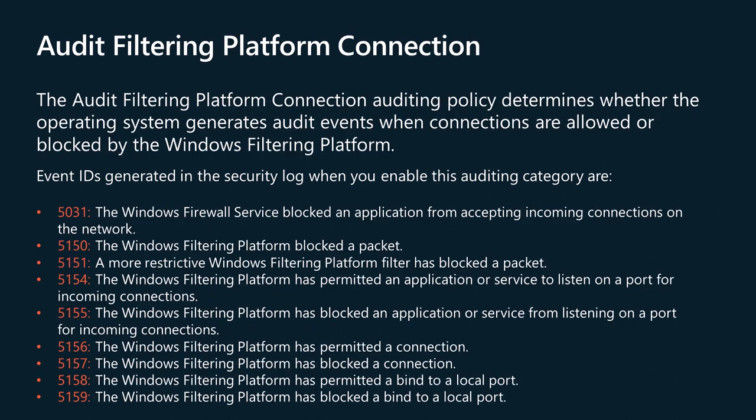The audit filtering platform connection auditing policy determines whether the operating system generates audit events when connections are allowed or blocked by the Windows Filtering Platform. Windows Filtering Platform, WFP, enables independent software vendors, ISVs, to filter and modify TCP/IP packets, monitor authorized connections, filter Internet Protocol Security, IPsec, protected traffic, and filter remote procedure calls, RPCs. This subcategory contains WFP events about blocked and allowed connections, blocked and allowed port bindings, blocked and allowed port listening actions, and blocked applications from accepting incoming connections. Items written to the security event log when this policy is enabled are listed in the documentation and on the screen.